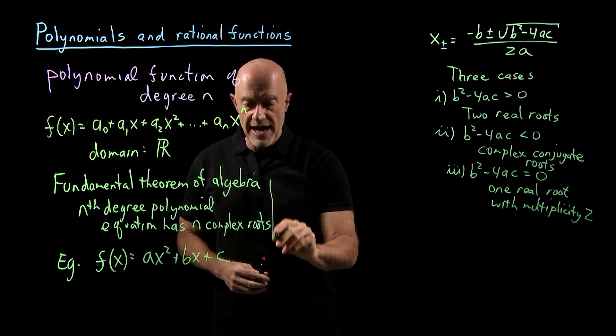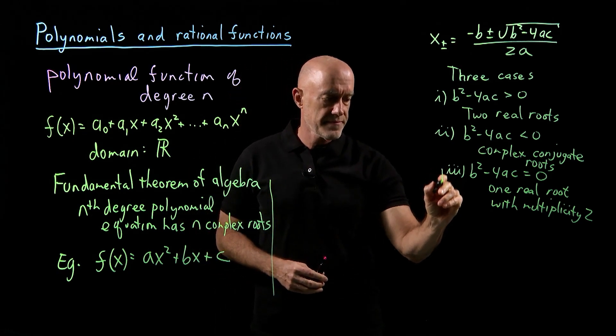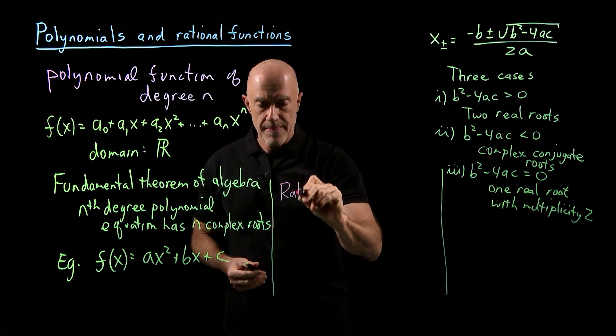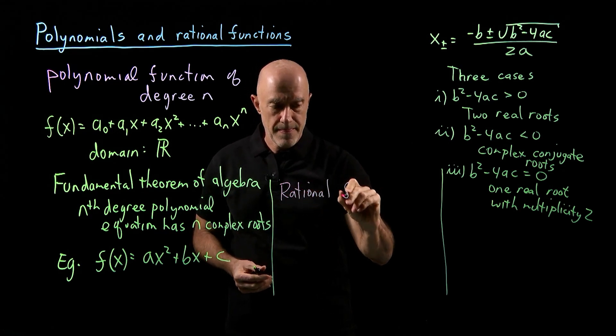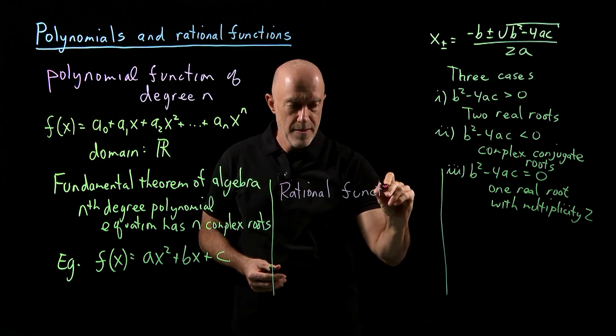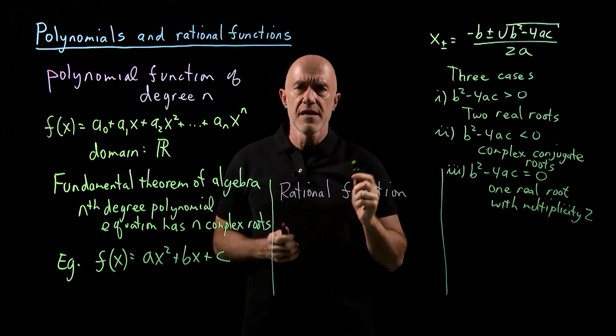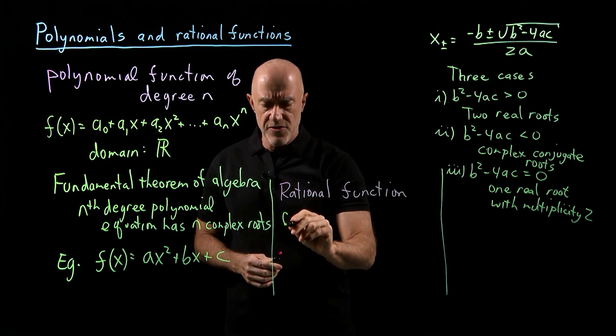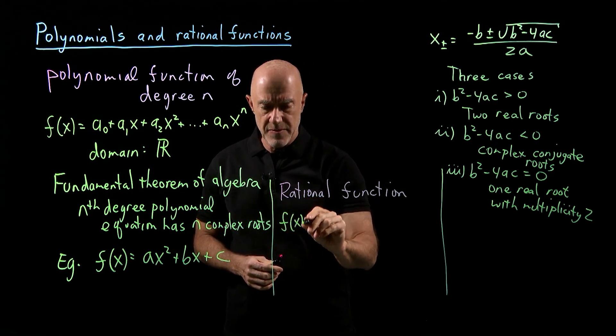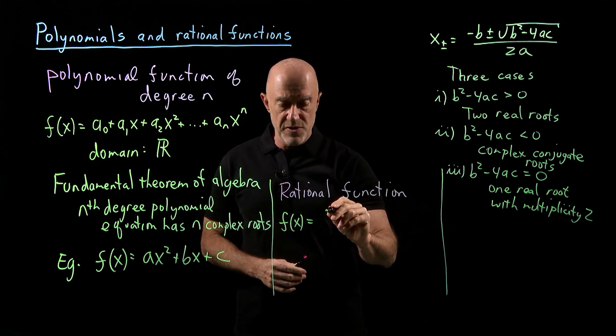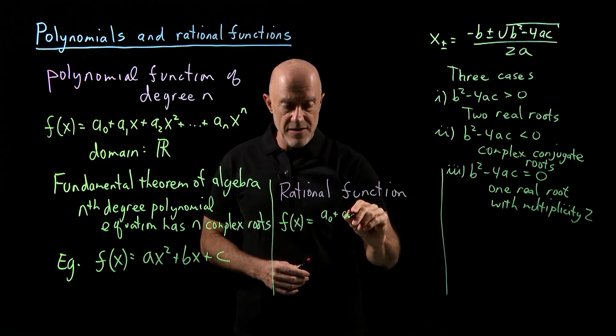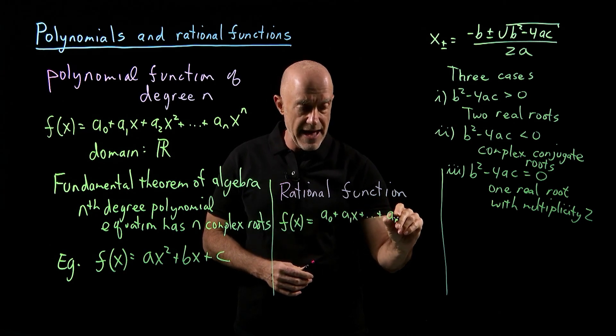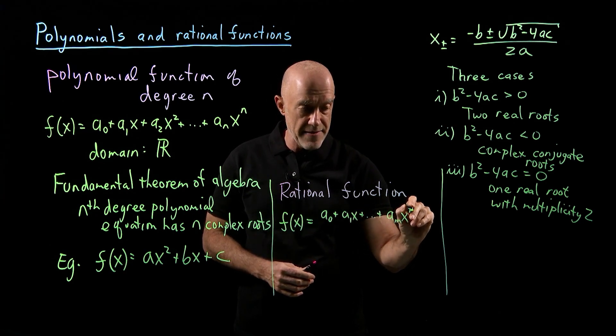Let's look at rational functions then. What is a rational function? A rational function is a function that is the division of two polynomials. We can write a rational function f(x) as the numerator is a polynomial: a₀ plus a₁x plus ... plus aₘxᵐ.